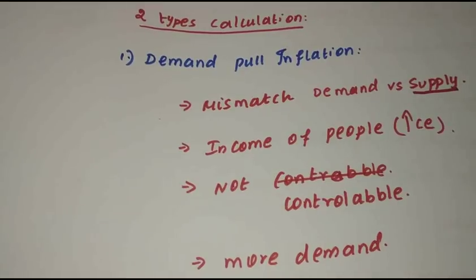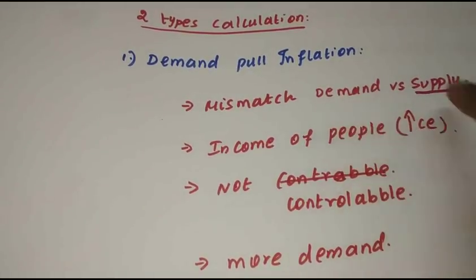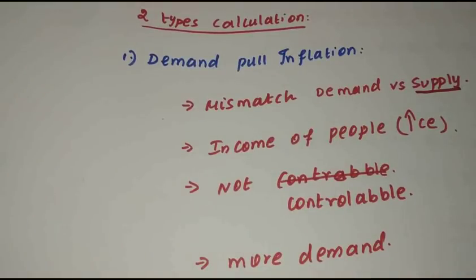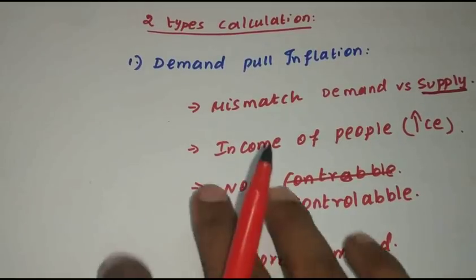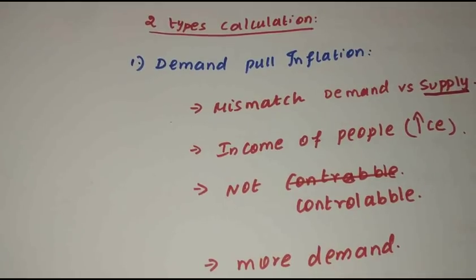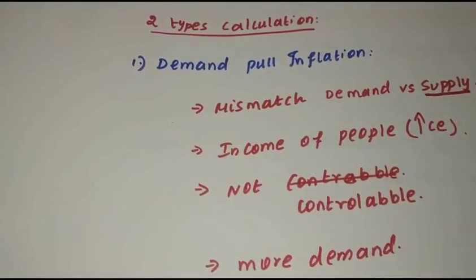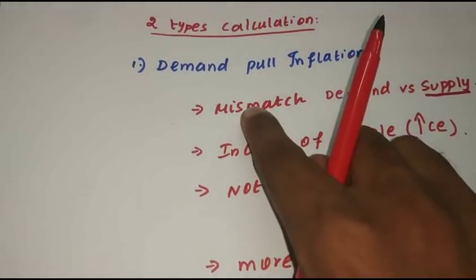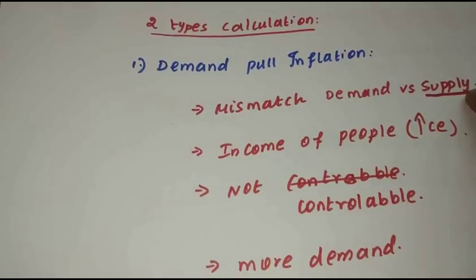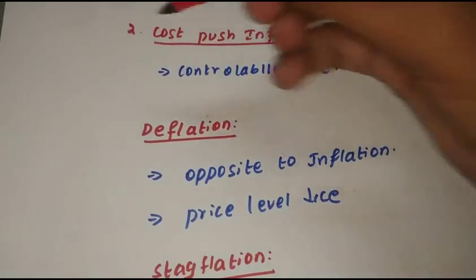Once supply is used, recovery is needed. You can't buy demand — supply and demand are mismatched. If you're talking about demand, demand-pull inflation is the result. Demand-pull inflation: more demand, and there is a mismatch between demand and supply.